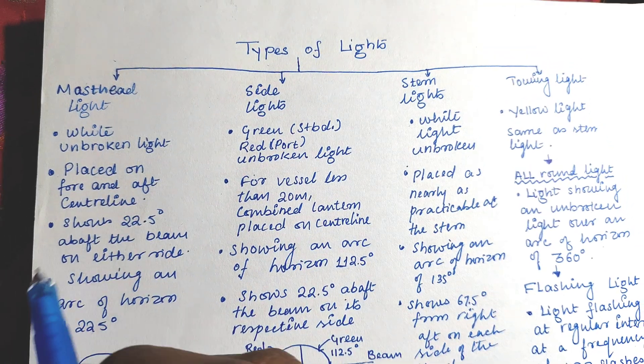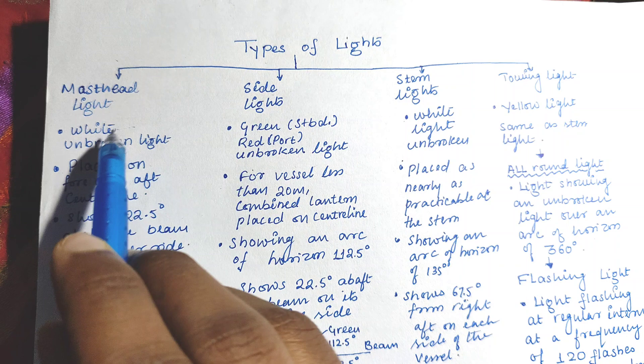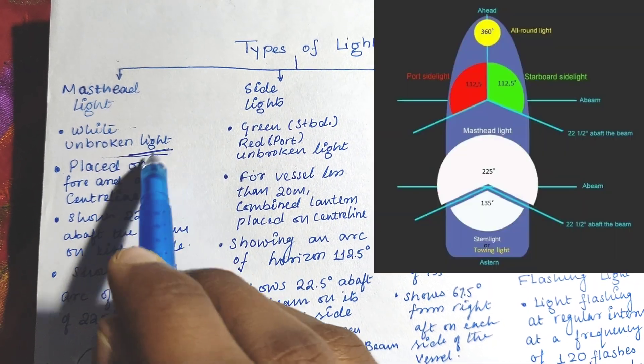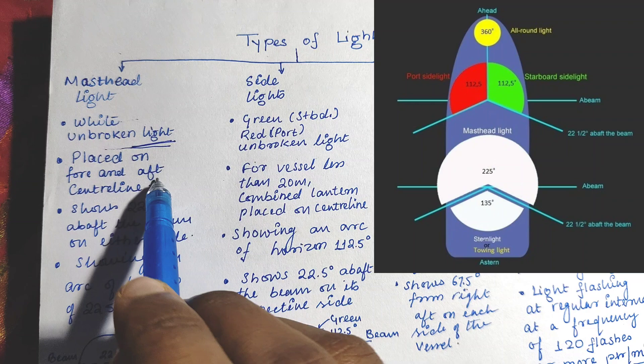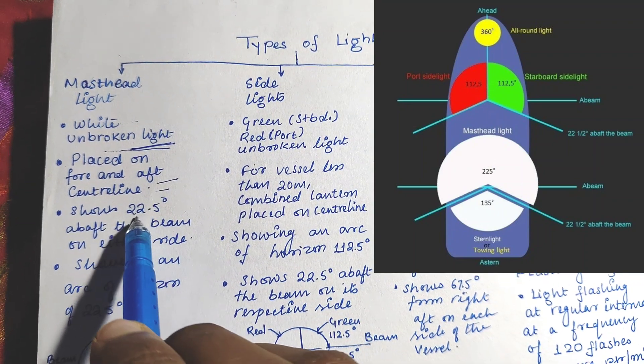Masthead light is a white unbroken light placed over the fore and aft center line. It shows 22.5 degrees above the beam on either side and an arc of horizon of 225 degrees.